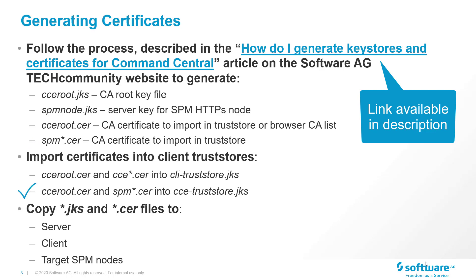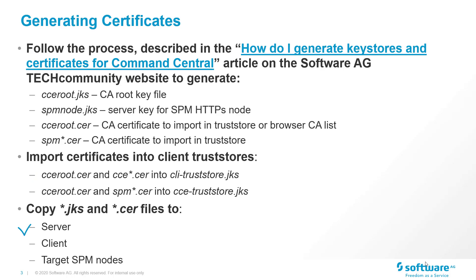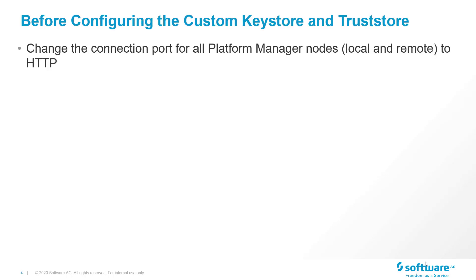Then copy all the files to the target Command Central server, the CLI client, and all managed platform manager nodes. Note that before you start configuring the HTTPS ports and SSL connections, you should change the connection ports for all platform manager nodes to HTTP.